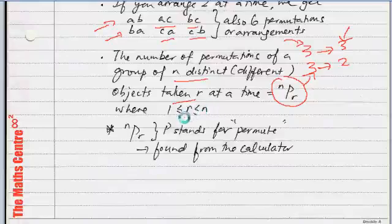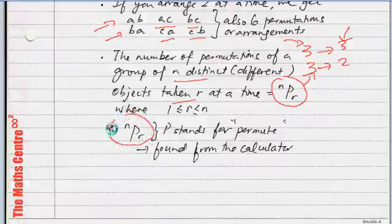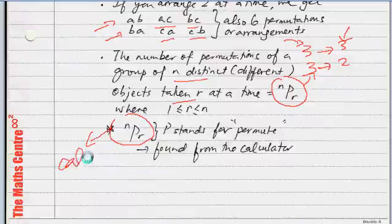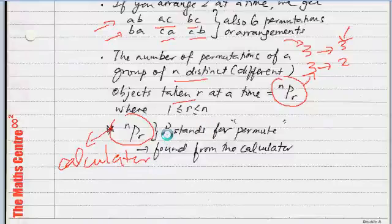So, the formula says that the number of such permutations of n objects taken r at a time is nPr. Now, of course, r has to be between 1 and n, and nPr, this is available on your calculator. This is available on the calculator. P stands for permute. And we will work out some of these values on the calculator.